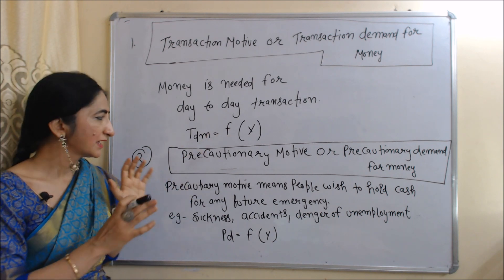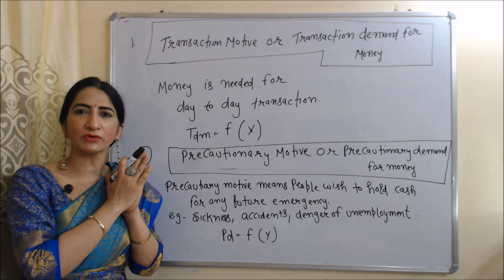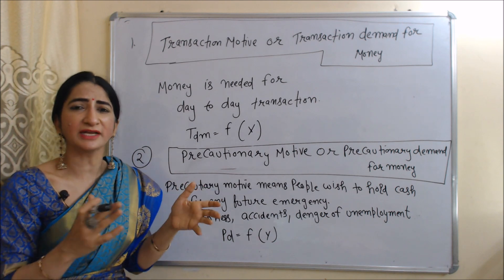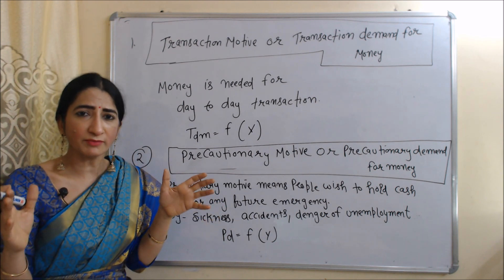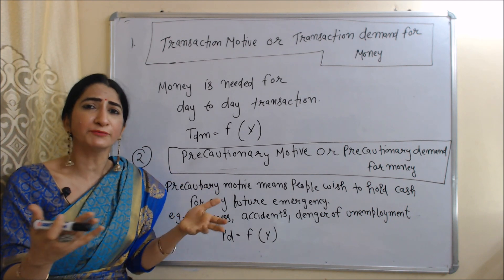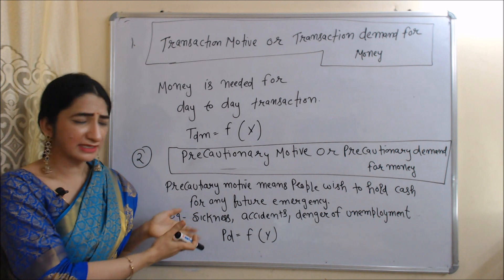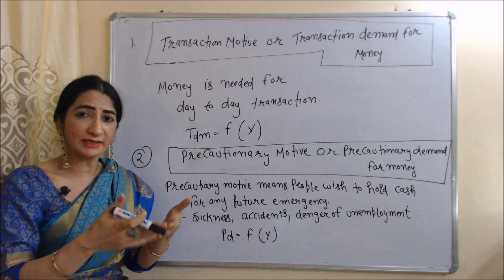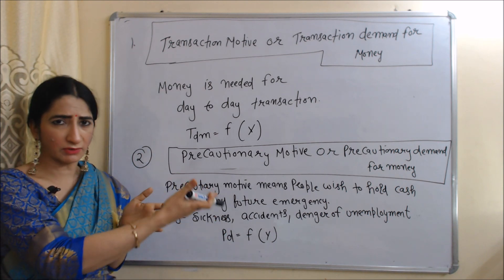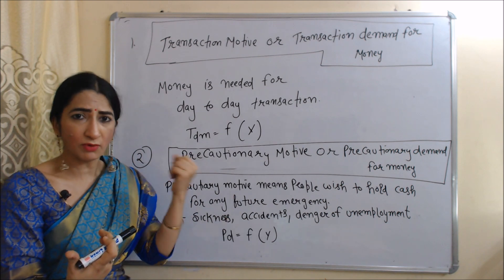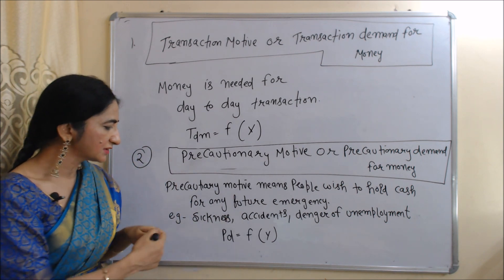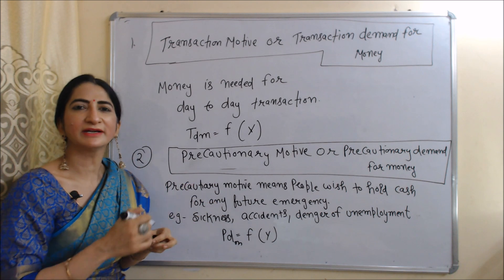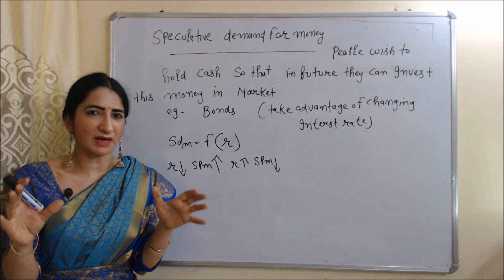Second is precautionary motive, or precautionary demand for money. Precautionary demand for money means people wish to hold cash for any future emergency, for example any sickness, accident, or danger of unemployment. Precautionary demand and income also have a direct relation: if income increases, precautionary demand for money will also increase; if income falls, precautionary demand will also fall. In the equation, PDM is precautionary demand for money, which is a function of income.